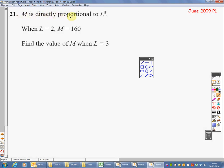Here we go. M is directly proportional to L cubed. M is proportional to L cubed. Stage 1. Stage 2. M equals K times L cubed. Done. Find the value of M when L equals 3. Now, they haven't given you a staged version of this, but I would still urge you to use the formula method that we just did before. So, when L equals 2, M equals 160. I've got to use that information.